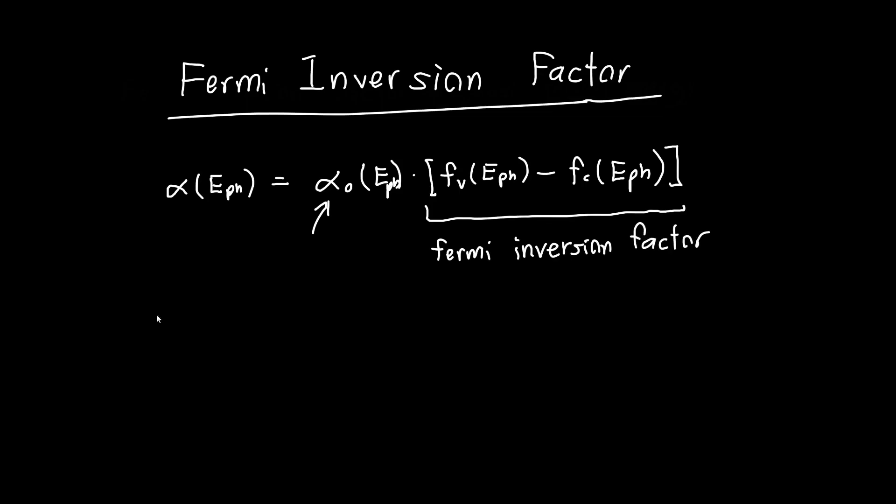Now, if you want to get the gain as a function of the photon energy, you can instead invert the Fermi inversion factor. Some people do this, but I don't find it terribly illuminating. I think working with the absorption coefficient, at least at this stage, is much more intuitive.